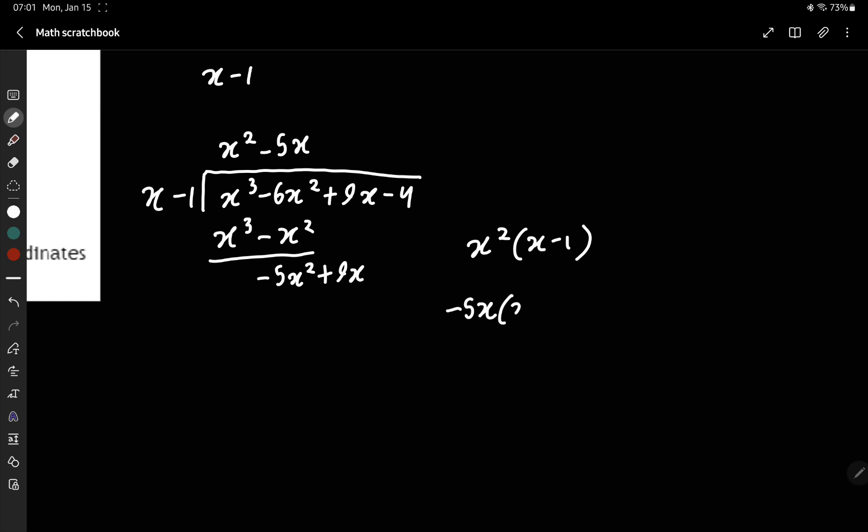Minus 5x times x minus 1 gives minus 5x squared plus 5x.